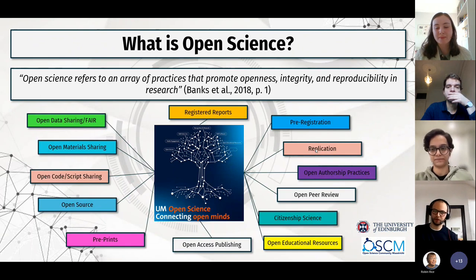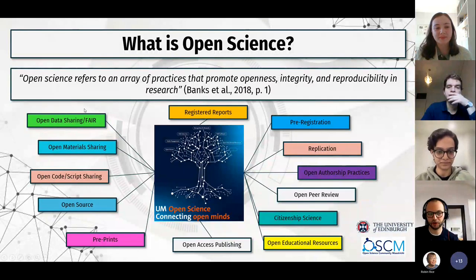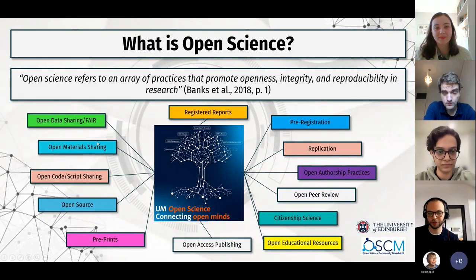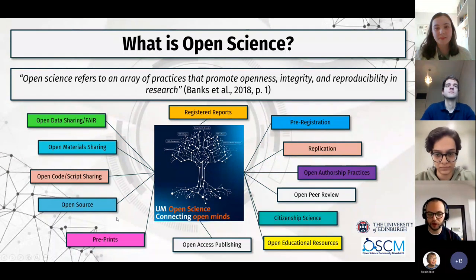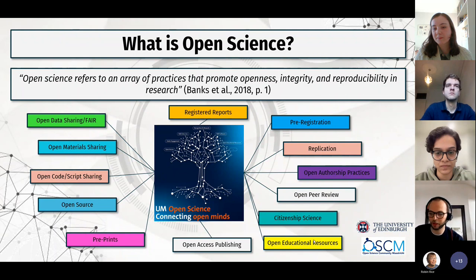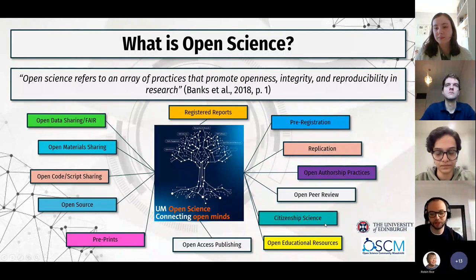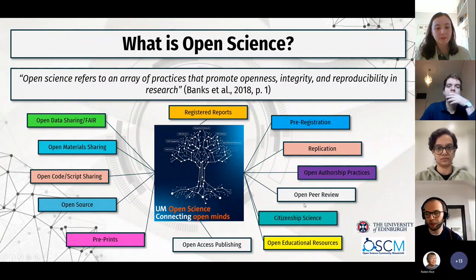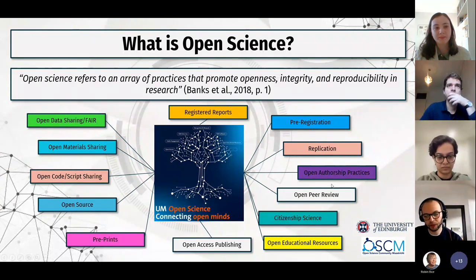Open science could mean many different things. Some you mentioned: sharing your data, sharing your code, sharing the materials — so if you've done a survey or experiment, what were the materials you used. Also: open source, uploading a preprint, publishing open access. There are also discussions about OER — opening up educational resources like lectures. Some people say doing citizen science is open science. And there's open peer review and open authorship practices.